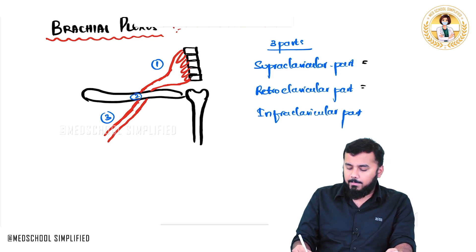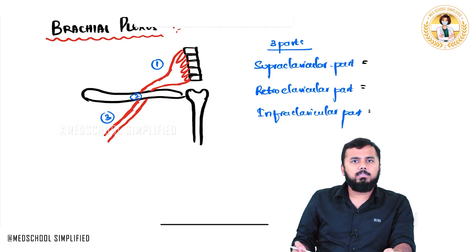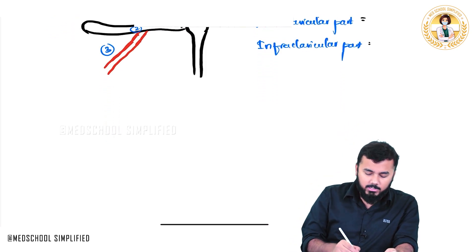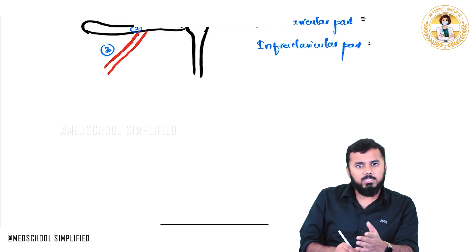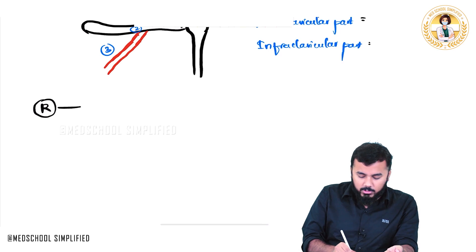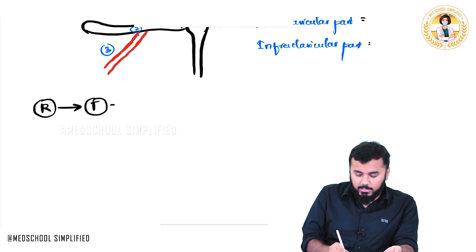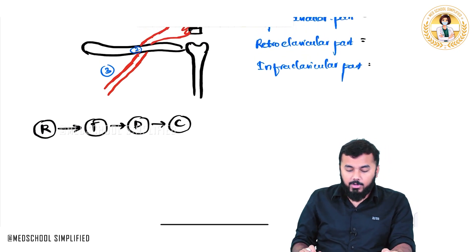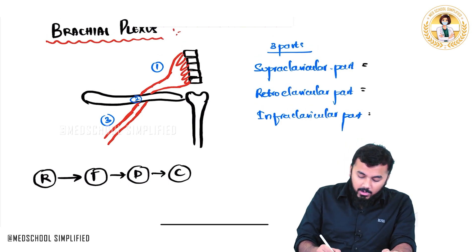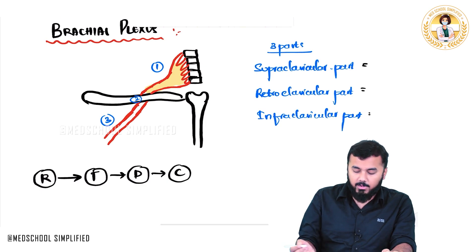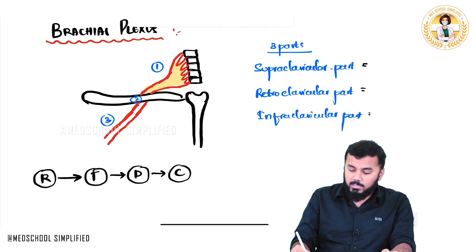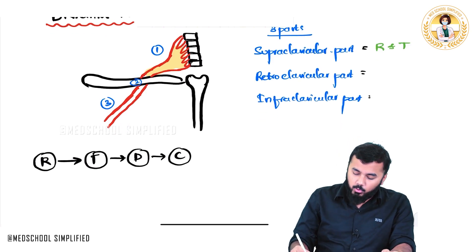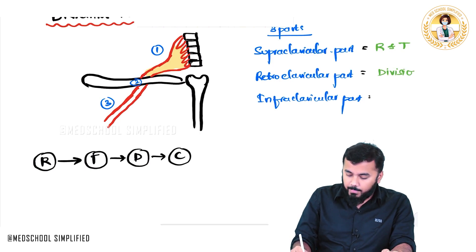Brachial plexus has roots, trunks, divisions, and cords. Roots continue as trunks, trunks continue as divisions, and divisions continue as cords. In the supra-clavicular region you have roots and trunks. In the retro-clavicular part you have only divisions, and in the infra-clavicular part you have cords.